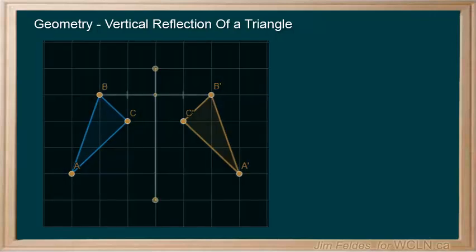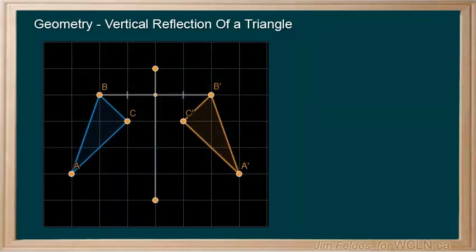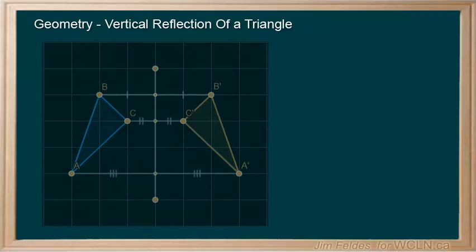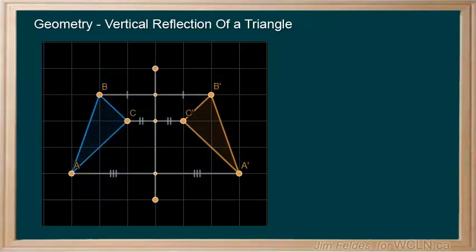The distance from the points on the triangle to the mirror must be the same for both the figure and image. Shown here are lines with little tick marks. The same number of marks tells you the lines are of equal length.